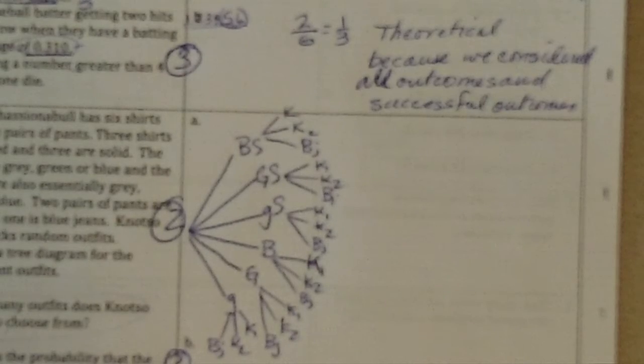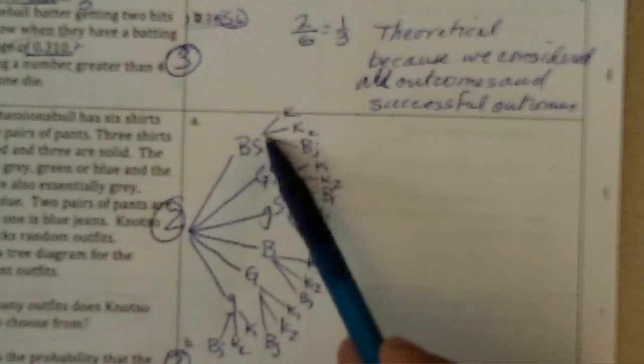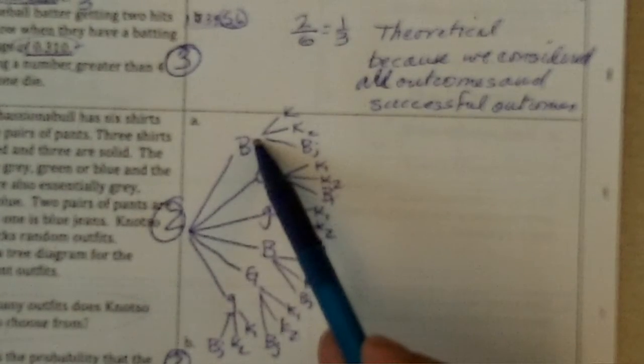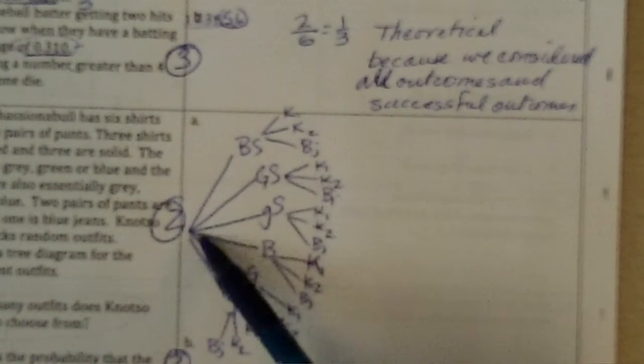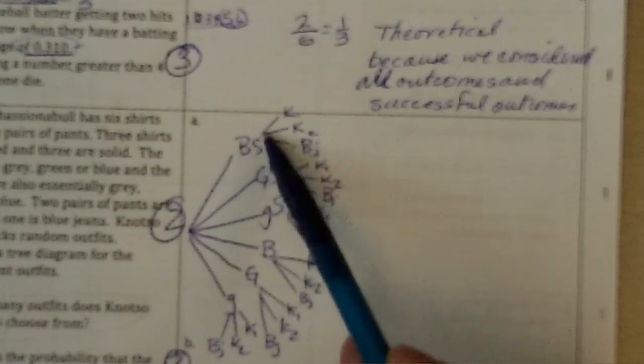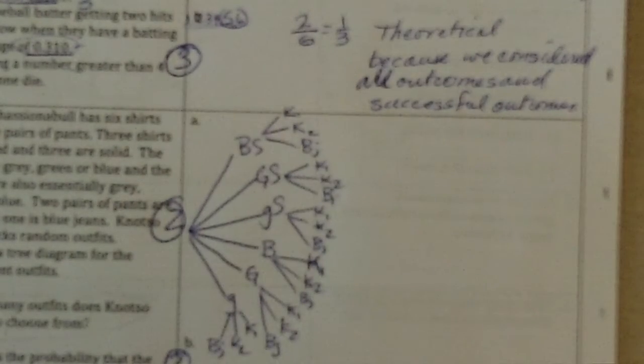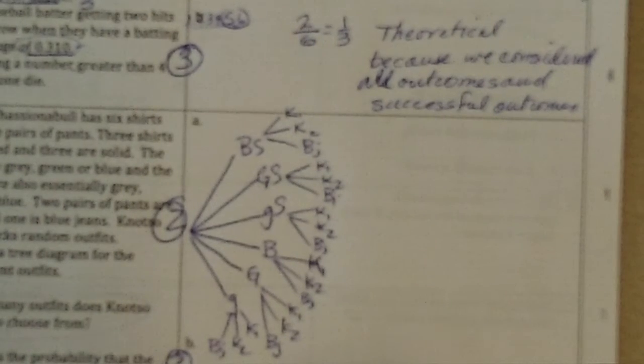What is the probability the outfit is a blue shirt and khakis? Well, blue striped or is not there. Well, yes, blue could be striped or blue not striped and khaki. So, there's blue striped, two of them that have blue striped and khaki and two of them that have blue and khaki. So, that's four out of the eighteen, which is two ninths.